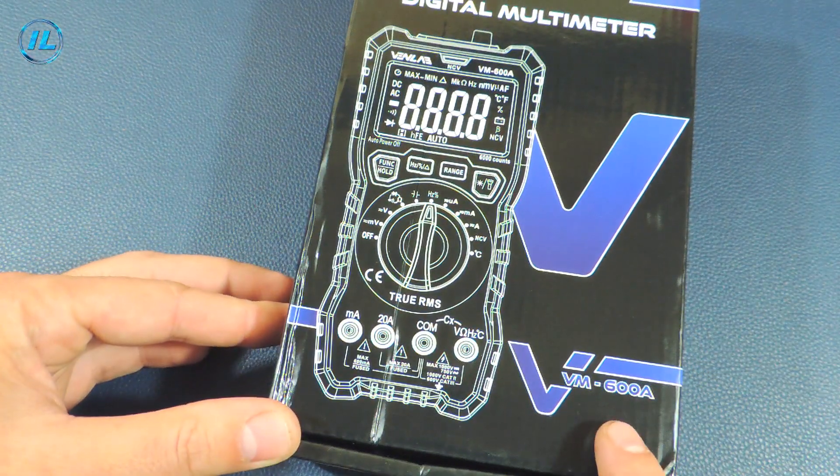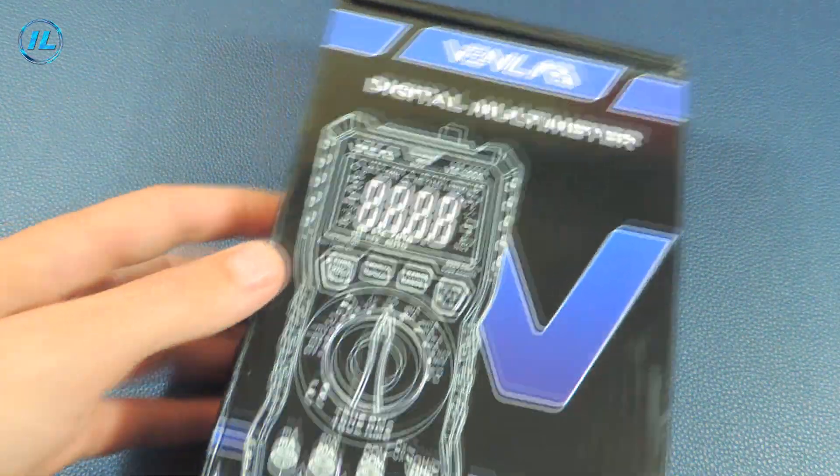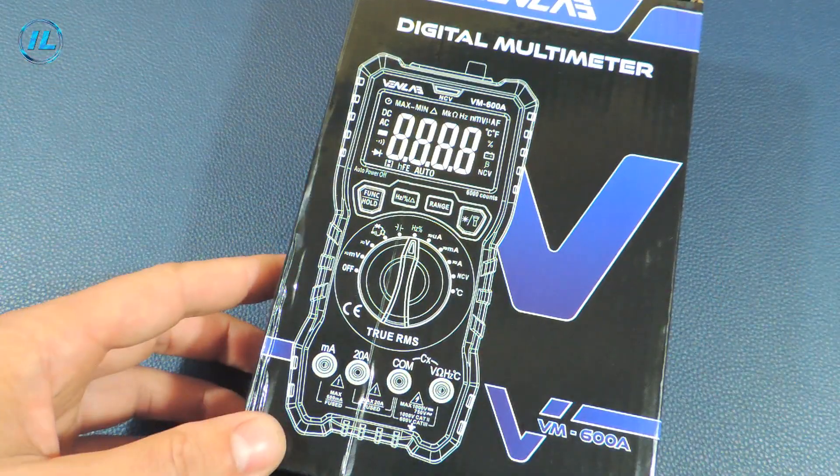The VM 600A multimeter comes in such a nice looking box in dark colors. Let's see what's inside.